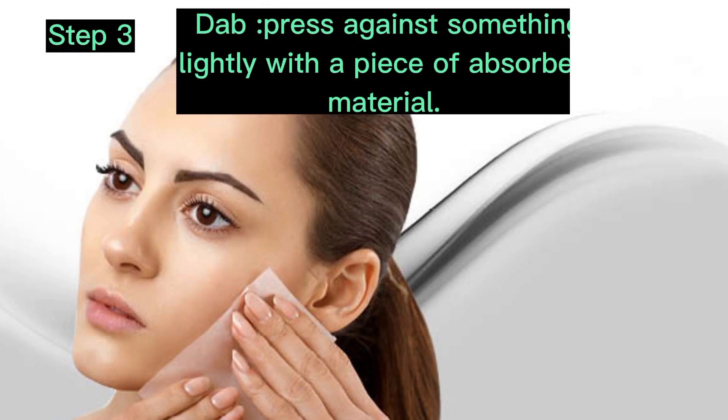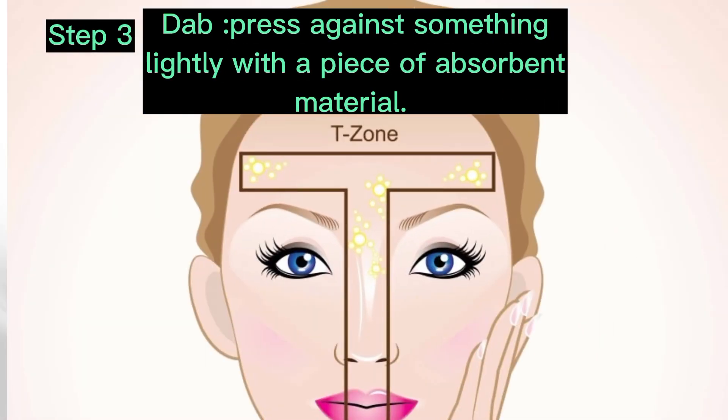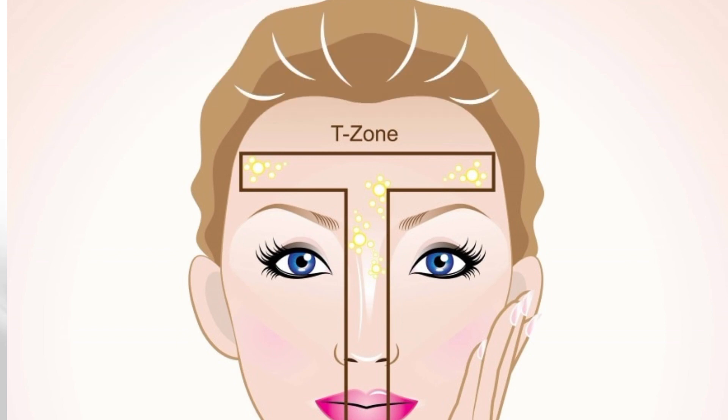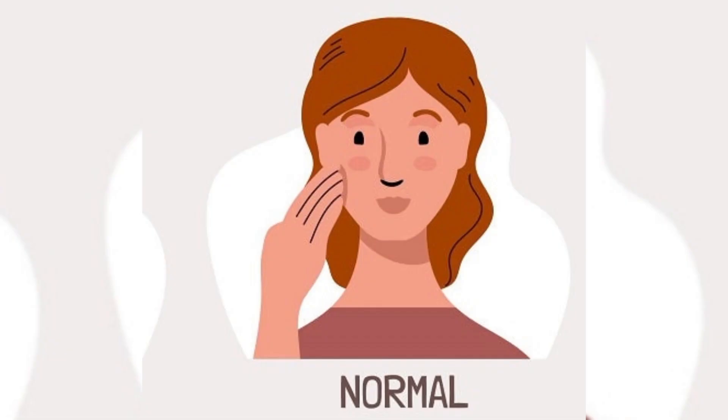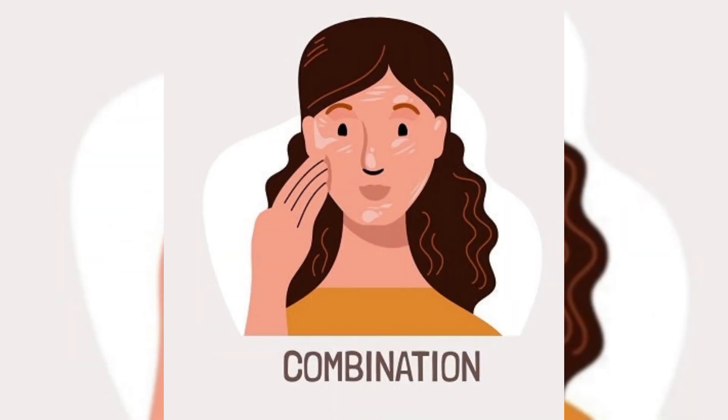Dab your face with a tissue. Pay attention to the T-zone — that is the area of your forehead and nose. Now, skin falls into four types: normal, oily, dry and combination. Look out for the following and determine your skin type.